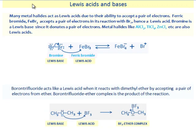Many metal halides act as Lewis acids due to their ability to accept a pair of electrons. Ferric bromide, FeBr3, accepts a pair of electrons in its reaction with bromine, hence a Lewis acid. Bromine is a Lewis base since it donates a pair of electrons.